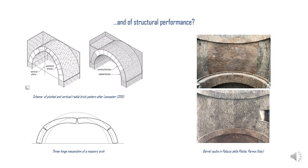If in the Near East the scarcity of wood may justify the use of pitched vaults, in the European tradition we can see that vertical bricks are most often used only at the crown of the vaults. The reason for using vertical bricks at the crown, when the haunches are built of radial bricks, is not always clear. Choisy speculates that haunches are built of radial bricks without centering until the point where this was no longer possible, and then the vault was completed with vertical bricks.